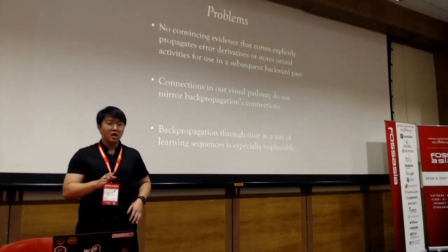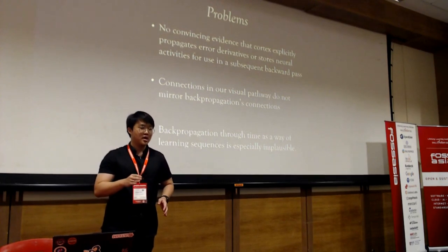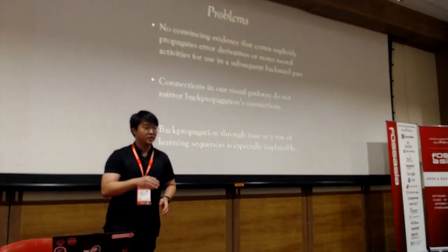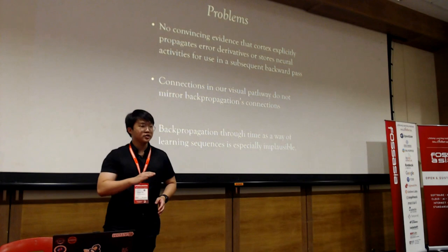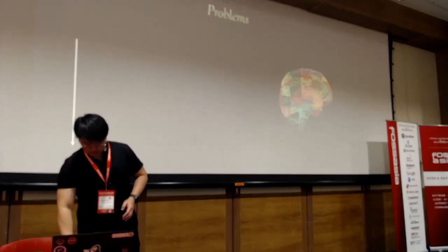Our perceptual system has to do inference and learning in real time — it can't stop to do backpropagation. Also, there's another big problem noted in Lillicrap et al.'s paper: feedback in the brain orders neural activity.